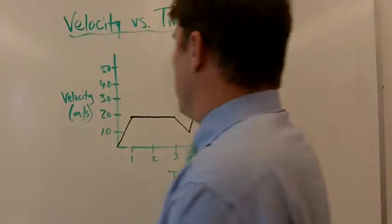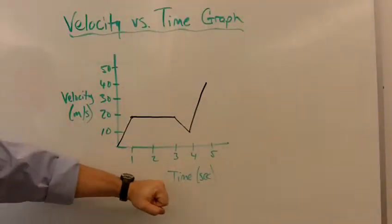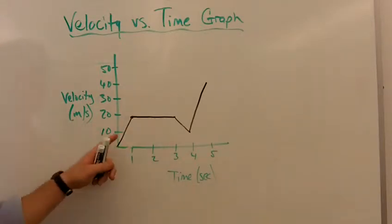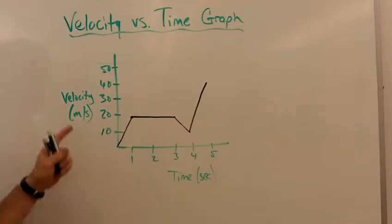We have velocity on the y-axis instead of distance, and how does that change things? Well, a lot. Now it means a totally different thing. Instead of the slope of this line in a distance versus time graph meaning the velocity of the object at this point, now we're talking about the velocity changing over the course of this time.